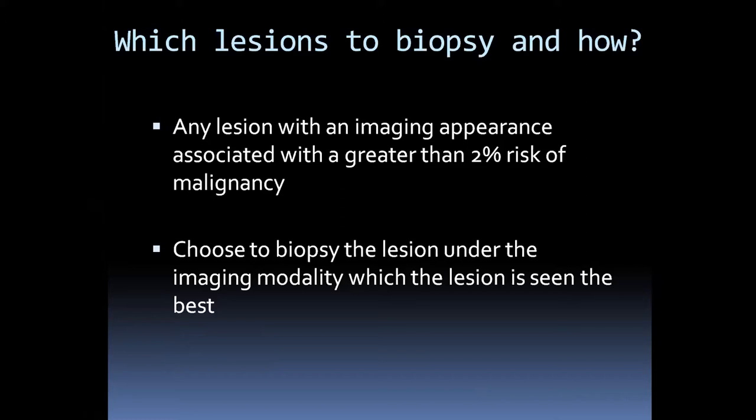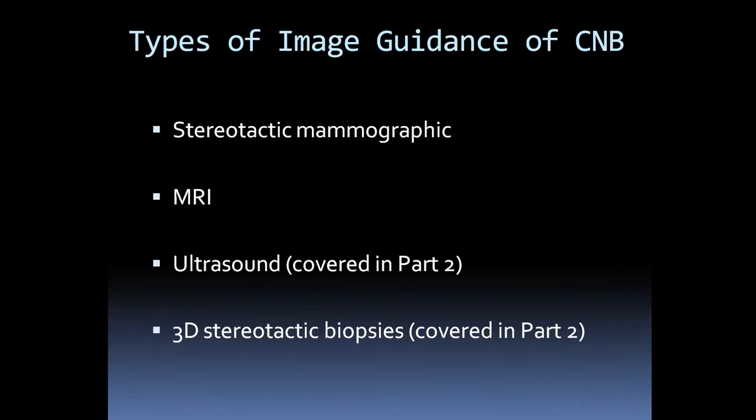Any lesion with an imaging appearance associated with greater than 2% risk of malignancy goes to biopsy. Anything with less than 2% risk is traditionally BIRADS-3 (probably benign), and we follow it. Once the 2% threshold is reached, core biopsy is indicated. You want to choose the biopsy technique where you can best visualize the lesion — if best seen on ultrasound, biopsy under ultrasound; if best seen on mammography, biopsy under mammography; or MRI, et cetera.